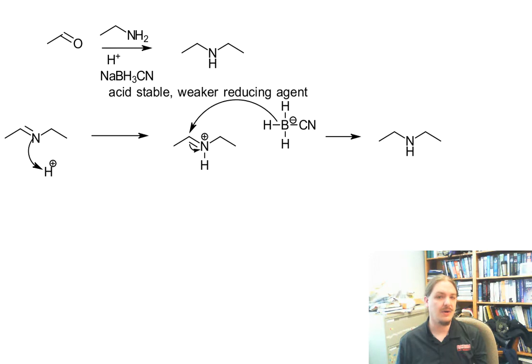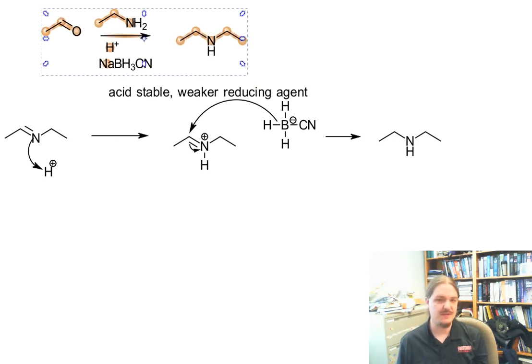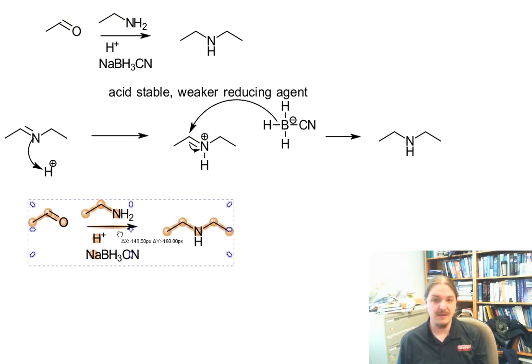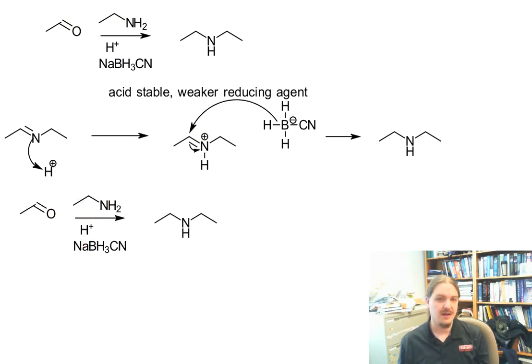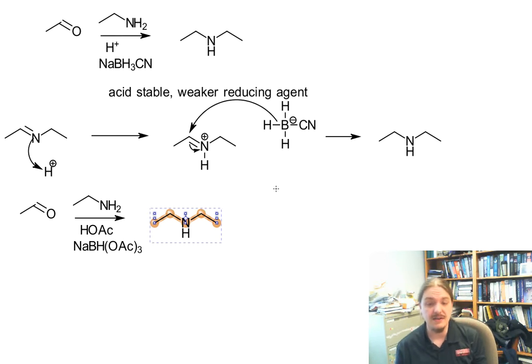I want to just highlight the other reagent that some chemists use for this specific reaction. So I'm actually just going to use my same example. An aldehyde, ethylamine, can make diethylamine. So in a case where we use acetic acid as the specific acid, you can use sodium triacetoxyborohydride. And this is made actually by just dissolving sodium borohydride in acetic acid.